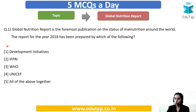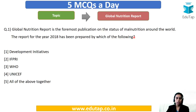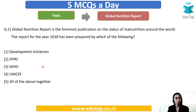Question number 1 from the Global Nutrition Report: the Global Nutrition Report is the foremost publication on the status of malnutrition around the world. The report for 2018 has been prepared by which of the following? This is a typical question asked in examinations about which organization releases various reports and indexes. The options are: Development Initiatives, IFPRI, WHO, UNICEF, or all of the above? Give yourself 10 seconds to identify the correct option.